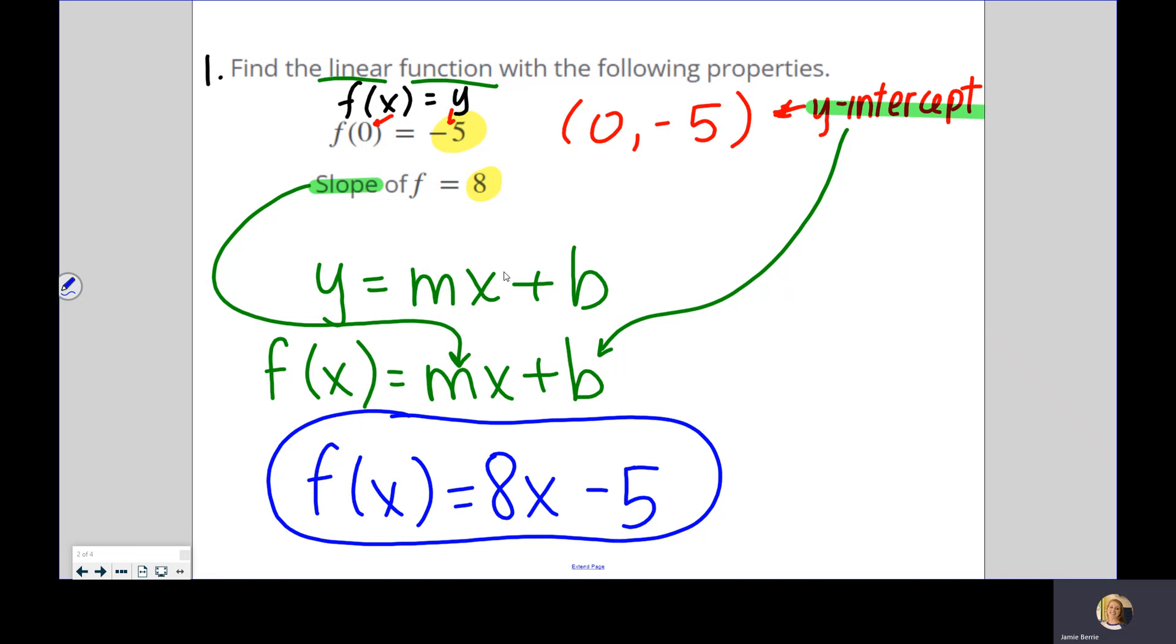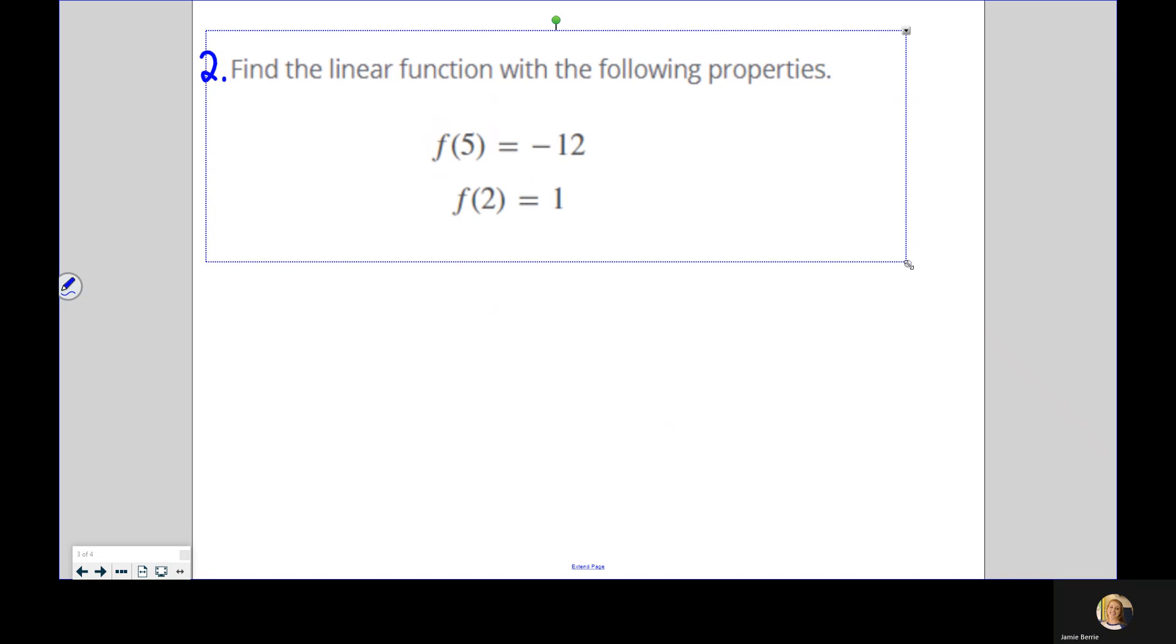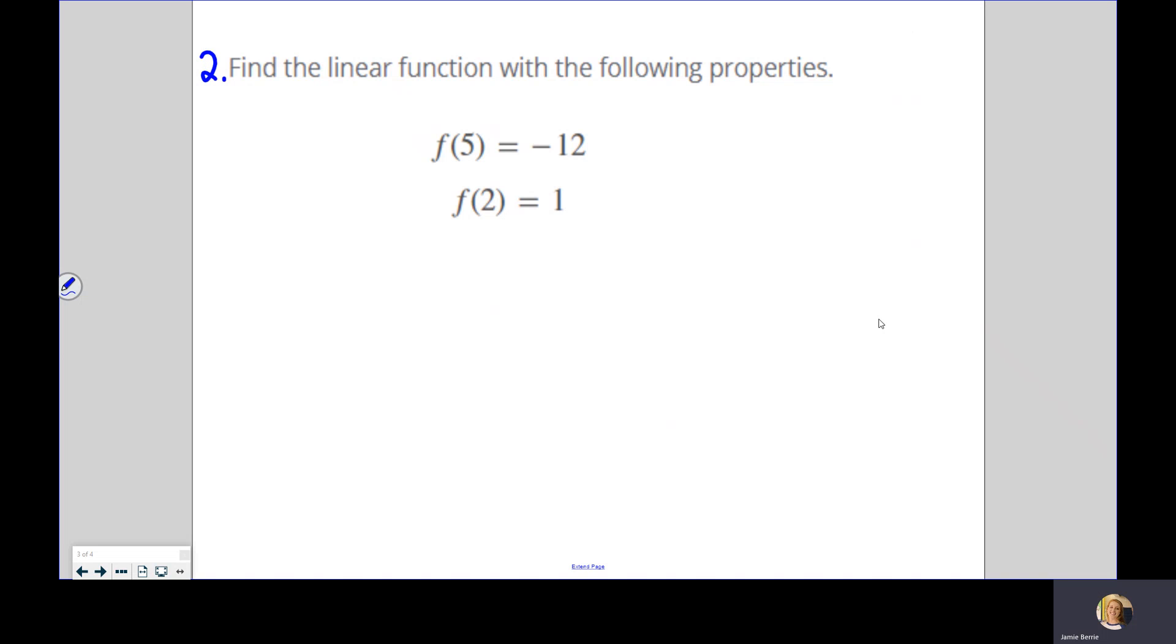Since they use the words find the linear function, they probably want you to use f(x) instead of y. But now we'll just fill in what the slope is, what the y-intercept is, and we'll be done. M is the slope, B is the y-intercept, so that's going to be f(x) = 8x - 5. That's it. This is not one that I would probably put on the test. The next one that I'm about to show you is the one I would put on the test.